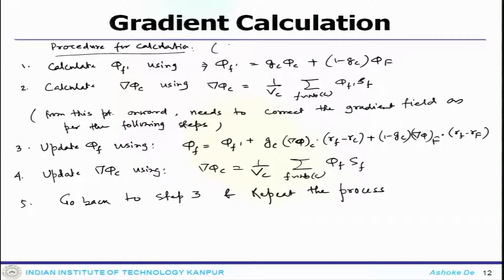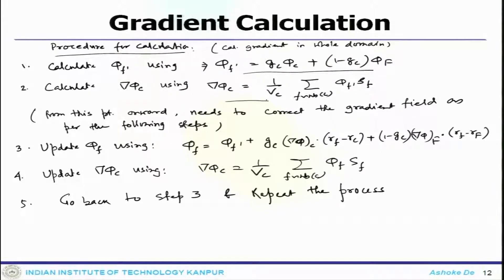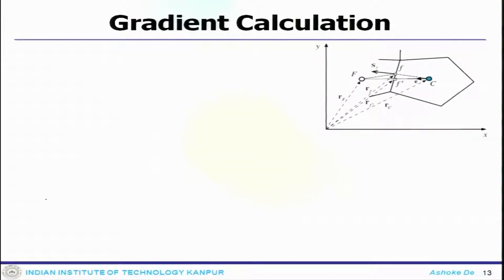Initially at the first iteration, you calculate the gradient field in the complete domain. Basically, you first calculate the gradient in the whole domain, then move along the calculation procedure. You get the expression, calculate phi_c using neighboring phases and cell volume, and then iterate to correct the field. You apply corrections, recalculate, and go back — that is option number 1.